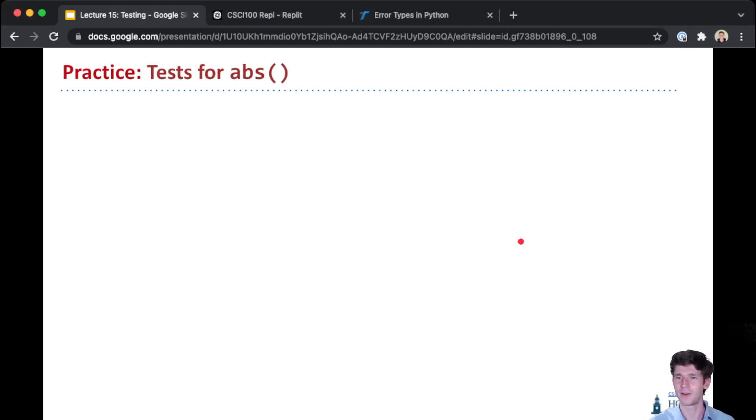So let's give it a try. Remember your absolute value function, which is one we wrote very early on? An absolute value just returns the absolute value of a number. What are the test cases that you need to cover all the possible cases?